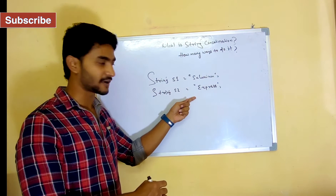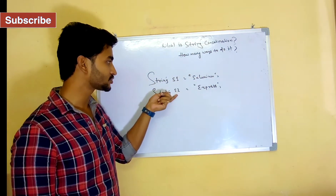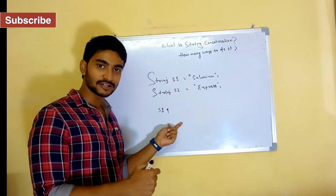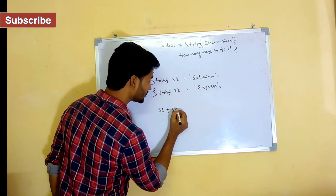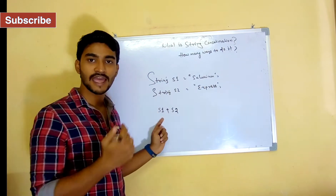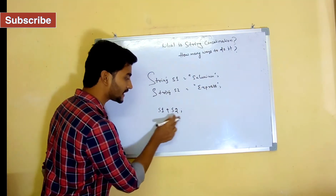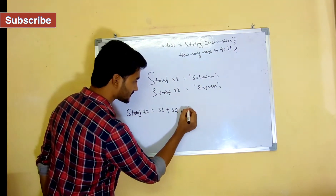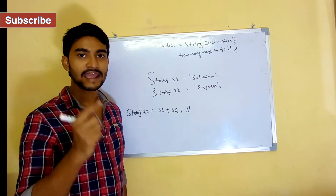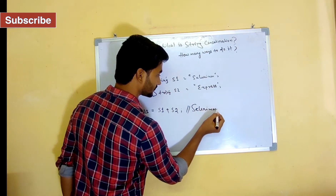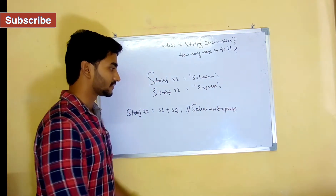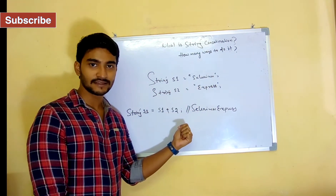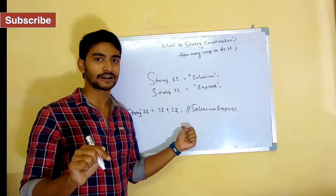Now I will get 'selenium express'. I have two different strings — the first string contains 'selenium', the second contains 'express'. I can simply do s1 plus s2, and store the result in another string variable s3. If I print s3, it is going to give me 'seleniumexpress', but there is no space because I'm just doing the addition without any space.